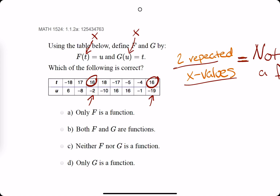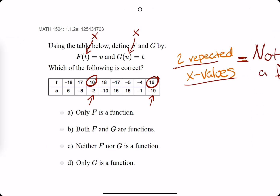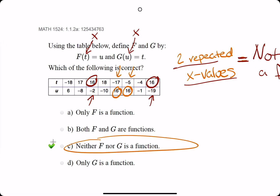So f is not a function because 16 is repeated. Then we look at g and think about whether any u values are repeated. Same deal here — there's 16 and 16 producing outputs that are both different: negative 17 and negative 5. So we find out that neither f nor g is a function.